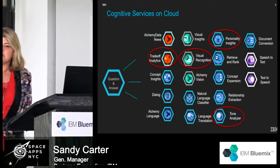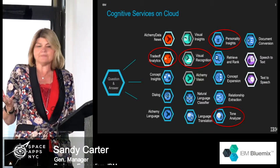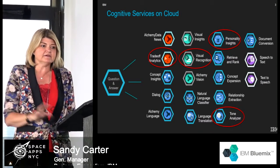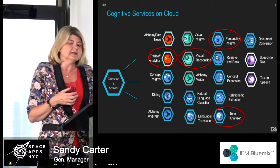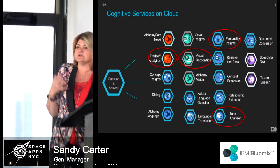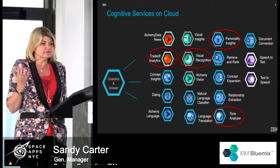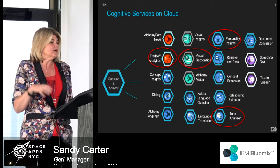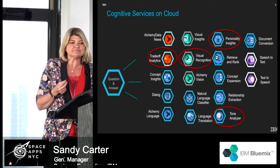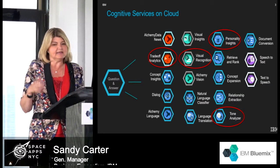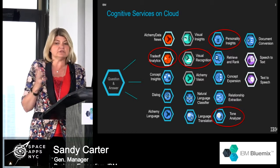A lot of folks when they think about cognition think about just answering questions, Q&A. But there are so many different elements of cognitive. Artificial intelligence, machine learning, or cognition is really helping companies do language translation, trade-off analysis, personality insight — a whole set of areas where you're seeing cognition used in different scenarios.